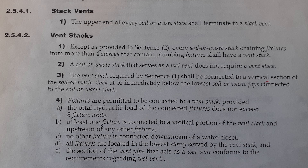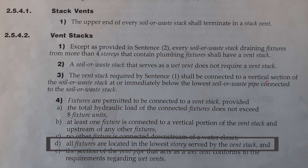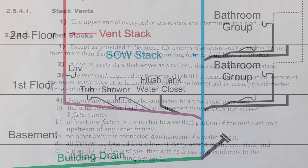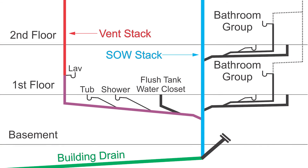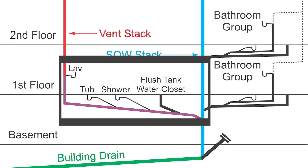Clause 2542, part 4D: all fixtures are located on the lowest story served by the vent stack. Once again in this picture, we see that all fixtures are on that bottom story where the vent stack gets connected into the soil away stack.